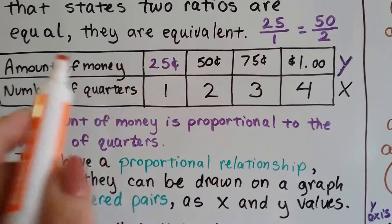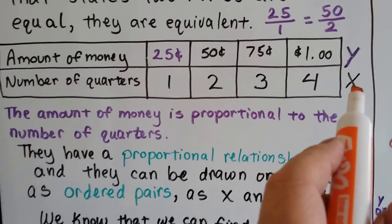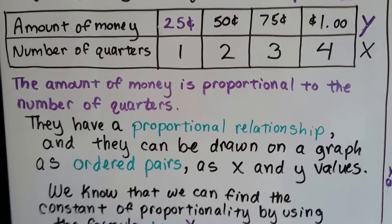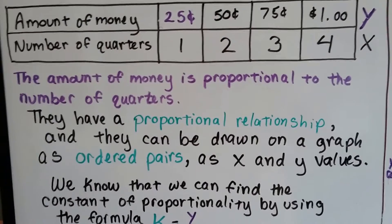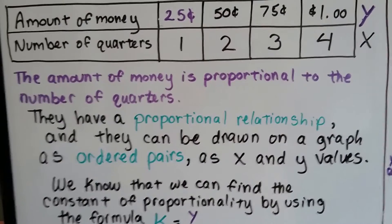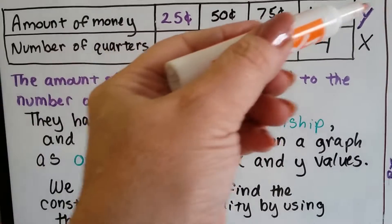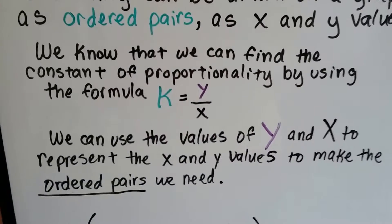So the amount of money we have is our y value, and the number of quarters we have is our x value. They're in proportion to the number of quarters, the amount of money. And we have a proportional relationship, and they can be drawn on a graph as ordered pairs, as x and y values. Here's our x values, the number of quarters, and our y values would be the amount of money.